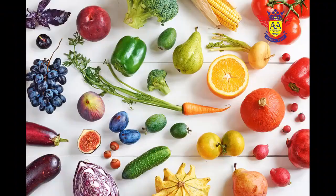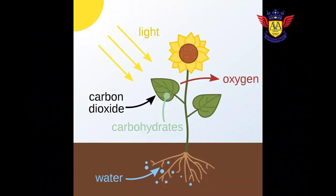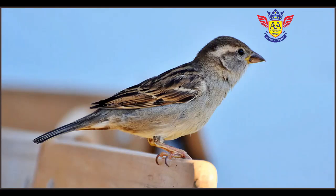The second point: living things need food. All living things need food to live. Food gives them energy and helps them to grow. Plants make their own food in the presence of air, water and sunlight. But different animals eat different types of food to grow. Birds eat grains, insects and fruits.